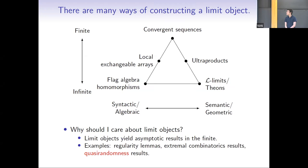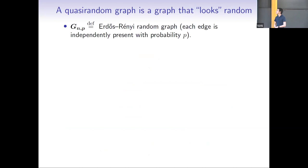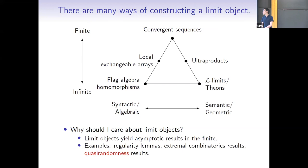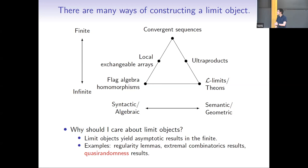Question: if a limit exists, is it unique in some way? That's the topic of uniqueness theorems. When you do a synthetic limit object, it is typically unique because it's a very minimalistic object. If you go through a semantic object, there will be a uniqueness theorem in a different sense: two limits represent the limit of the same sequences if and only if something holds. For graphons, you can use either the cut norm or measure-preserving functions to say when two graphons represent the same limit.